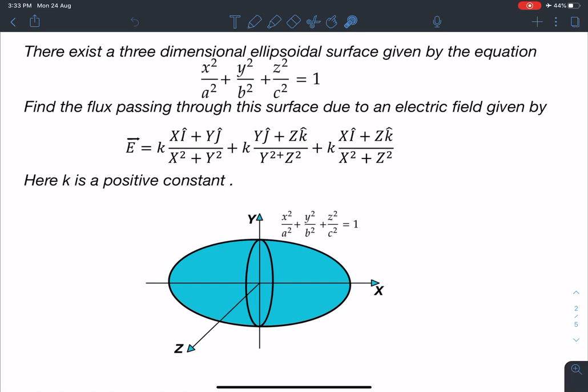So here is this. There exists a three dimensional ellipsoidal surface given by the equation x square by a square plus y square by b square plus z square by c square is equal to 1.